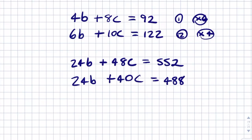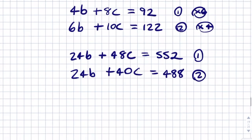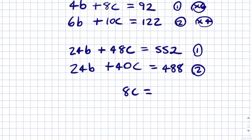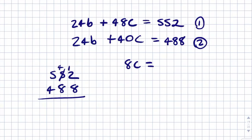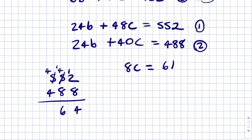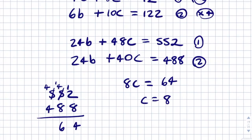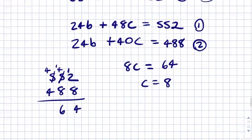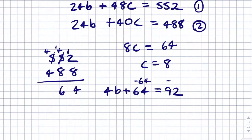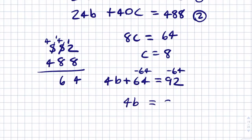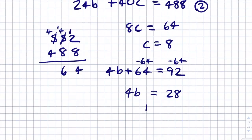We eliminate the B terms by doing equation 1 subtract equation 2. So 8C = 552 - 488 = 64, and dividing both sides by 8 gives C = 8. To find B, substitute C = 8 into the first equation: 4B + 64 = 92, so 4B = 28, giving B = 7.